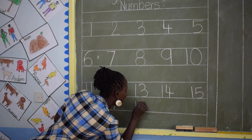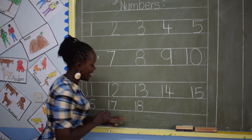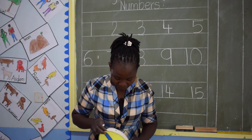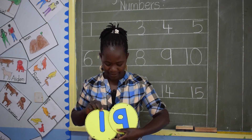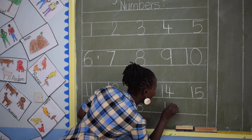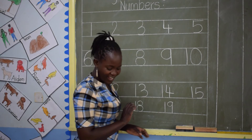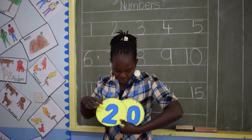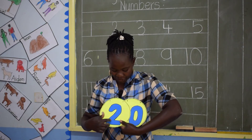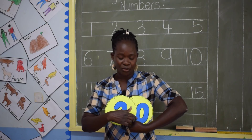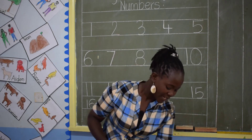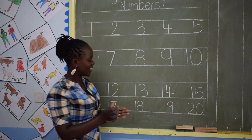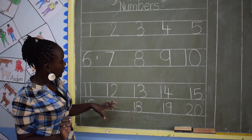18 is 1 and 8. Number 18. And then we go to number 19. And number 20 — this is number 20. 2 and 0. This is number 20. Here is how we write number 20. Now let's write all the numbers that we have written today.